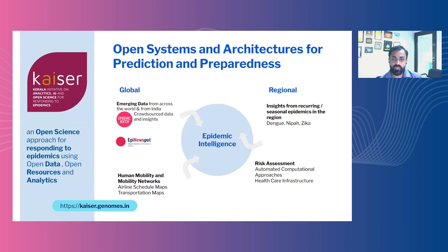We need to understand that genomics is just one part of our ability for prediction and preparedness. The central theme of all of this is to pull together data — what we call epidemic intelligence. This would come from global and regional initiatives and data sharing processes. You could pull together a variety of data sources, not just genomic data, but also things like human mobility networks, climate change-derived data, and news sources, and model these into epidemic intelligence. We are fortunate to have worked with a group of researchers in Kerala who have put together software and data resources in open source, enabling epidemic intelligence to happen at a much larger scale.